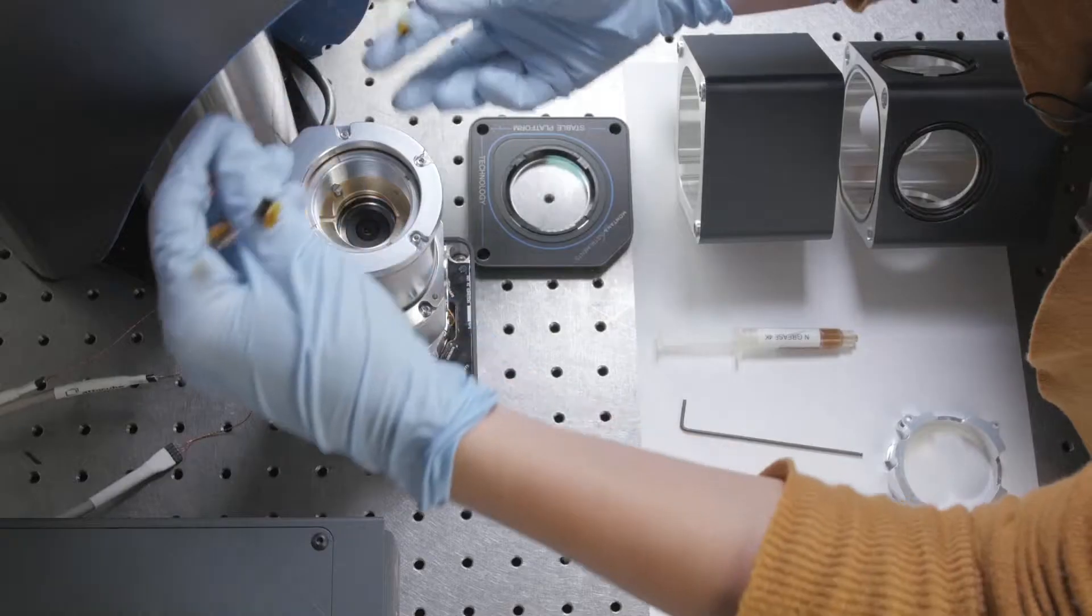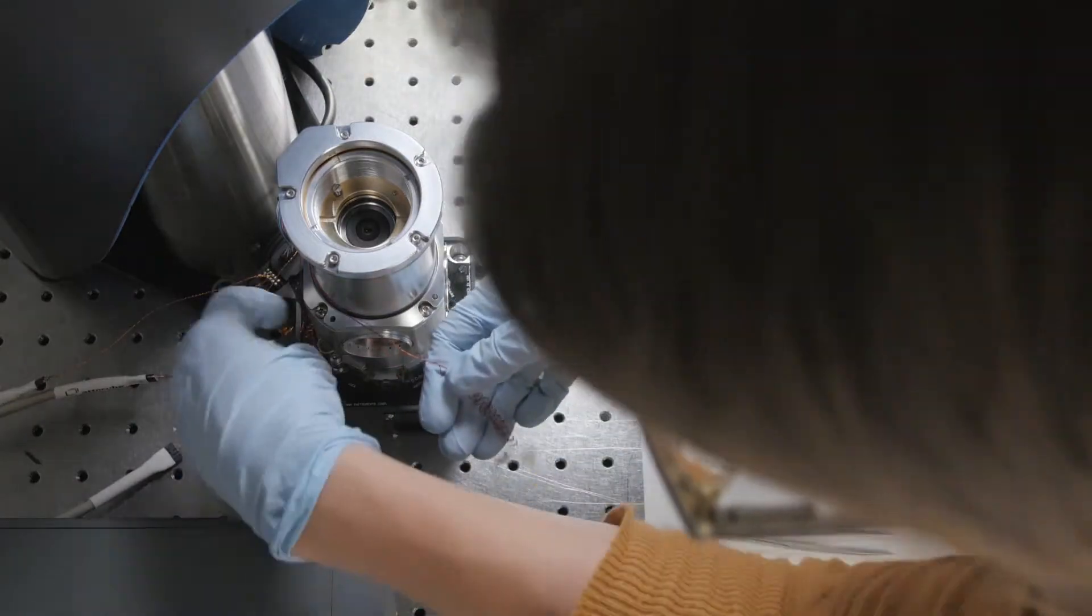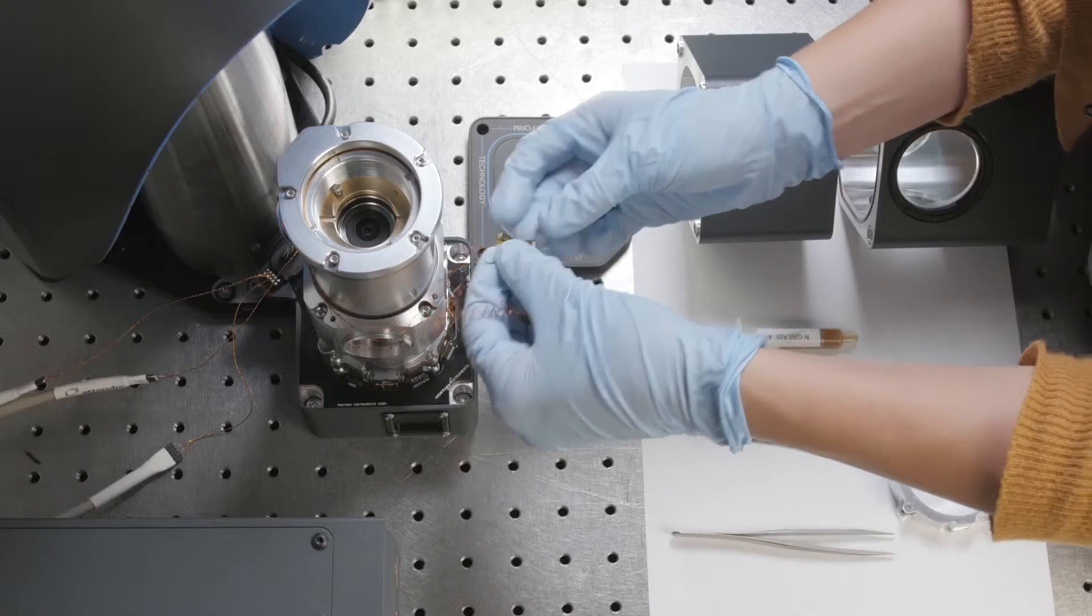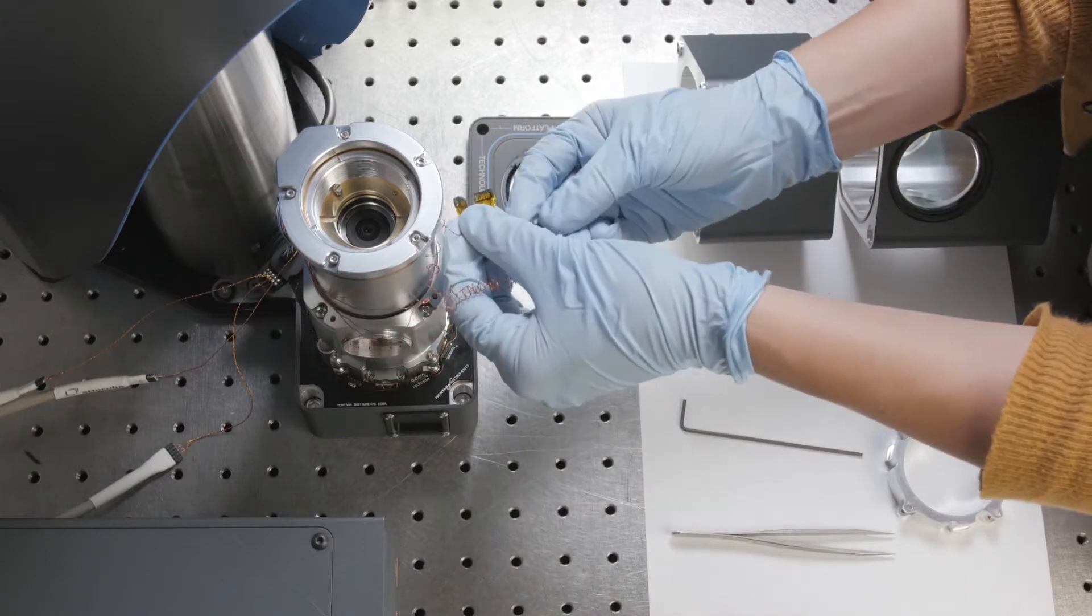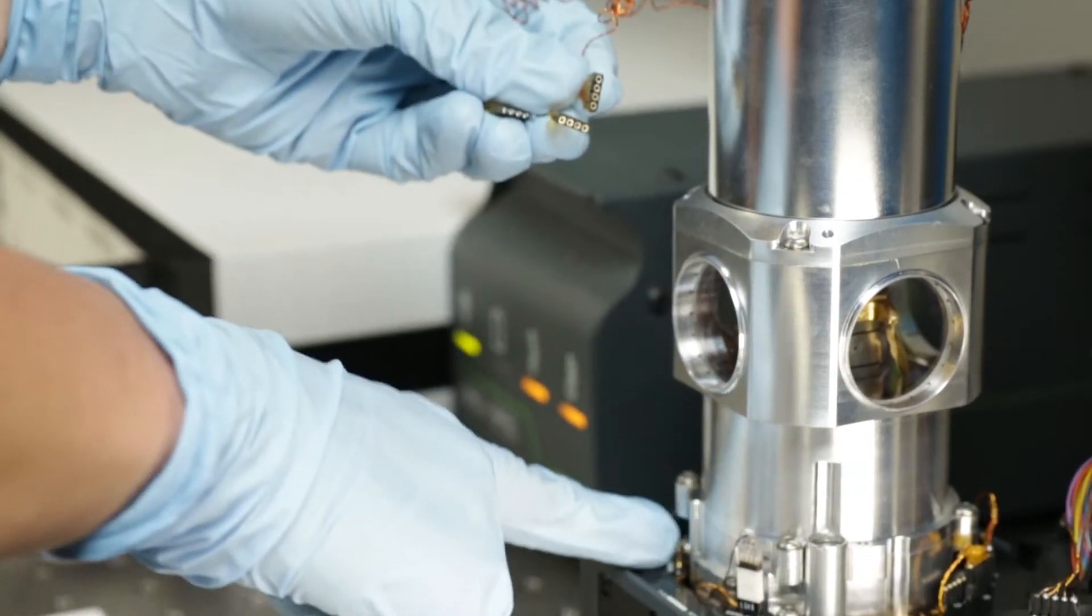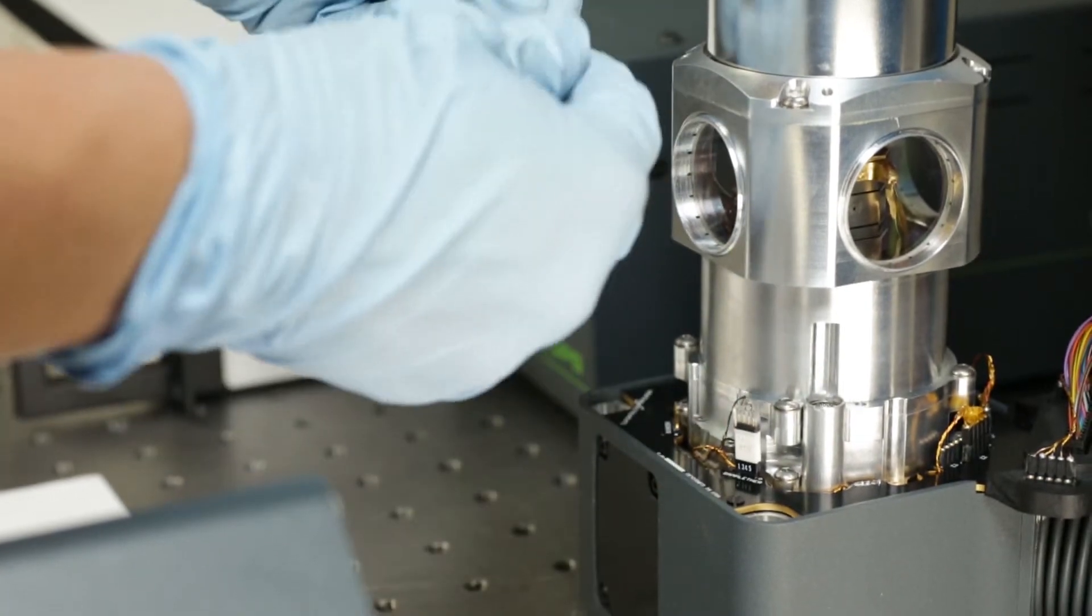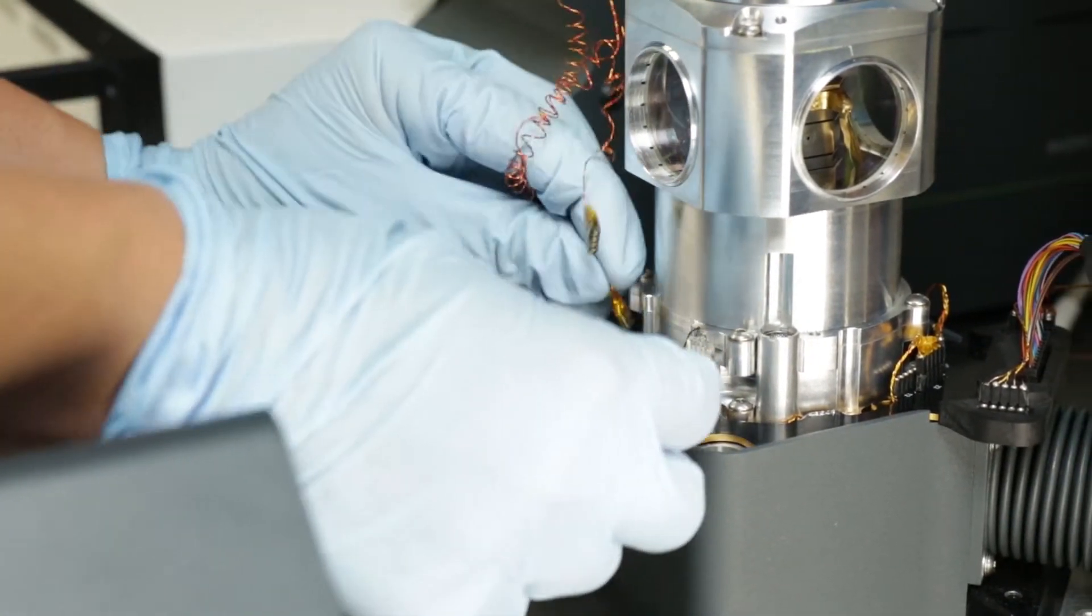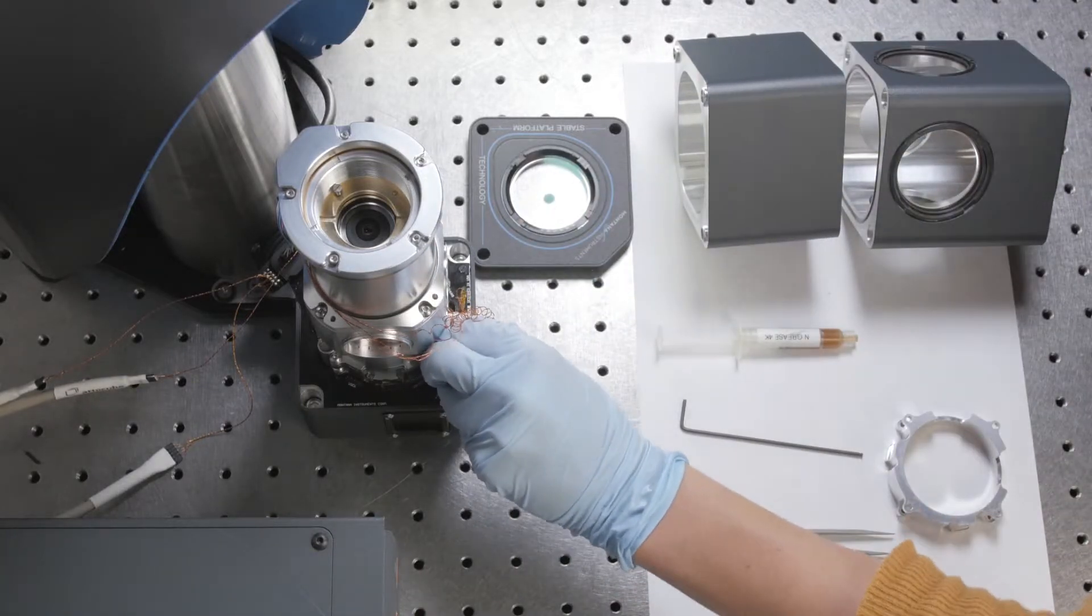Then we'll plug in our wires. They're labeled user heater and user thermometer, and those will be plugged into the corresponding connectors on the circuit board. Plug in the user heater to the user heater connection, and make sure the labels are pointing out.